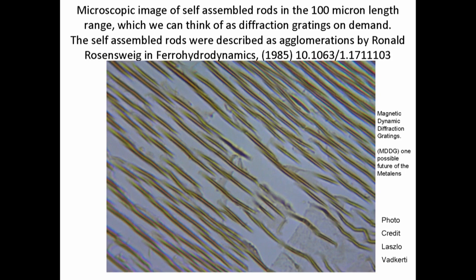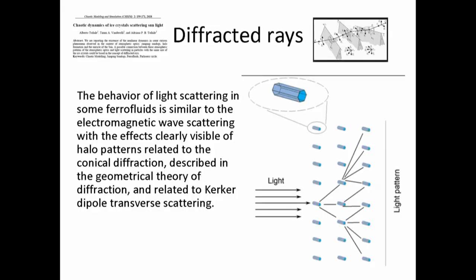These physical properties of ferrofluid were known even in 1985. Ronald Rosensweig in Ferrohydrodynamics described these as anomalies. The funny thing is, what was an anomaly or something we didn't want in 1985 is actually something we really want in 2019 because we have diffraction gratings on demand. We're reinforcing the idea that we know we have a diffraction grating being created on demand with multiple layers. You can describe this with the geometric theory of diffraction and it's also related to Kerker dipole transverse scattering.